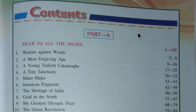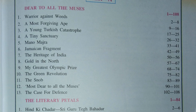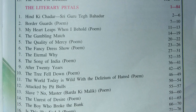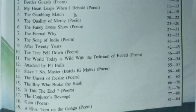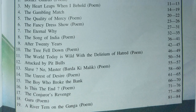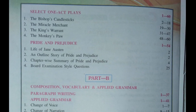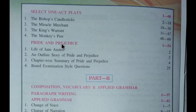Good morning dear students. Today we are going to discuss the syllabus for Plus Two Elective English. Look at the screen — in Part 1 there are three or four books. Book number one is 'Dear to All the Muses' with approximately 13 lessons. Book number two is 'Literary Battles' with 19 lessons and points. Next is one-act plays — four in number. There is also a novel: 'Pride and Prejudice.'